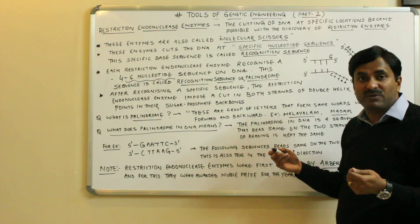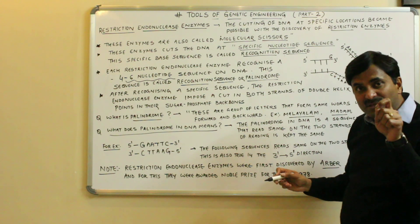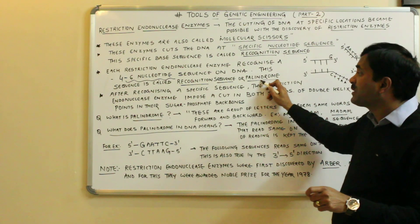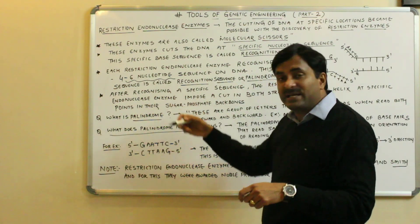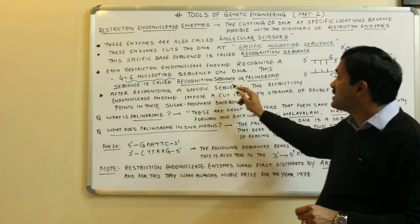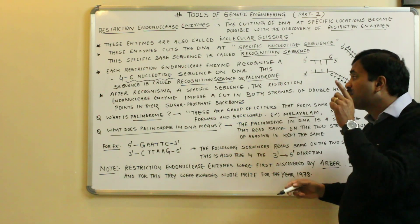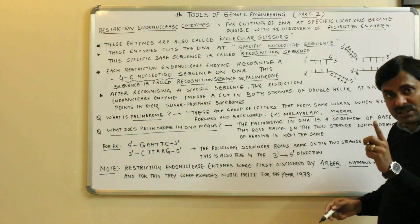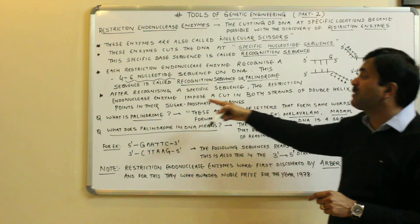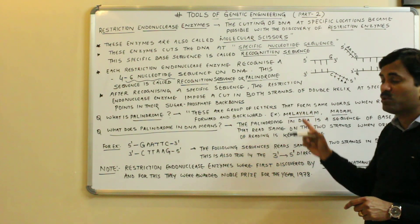The question arises: what is a palindrome? In a couple of minutes I will explain that. After recognizing a specific four to six nucleotide sequence on the DNA, the restriction endonuclease enzyme will impose a cut in both strands of the double helix at specific points in their sugar-phosphate backbones.